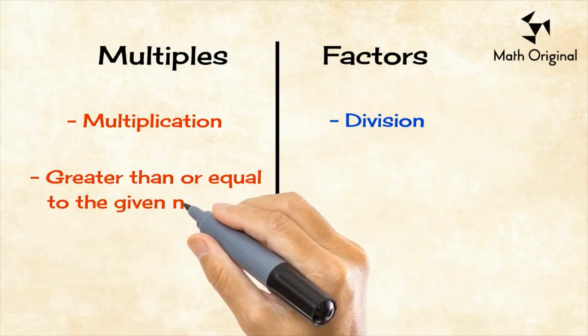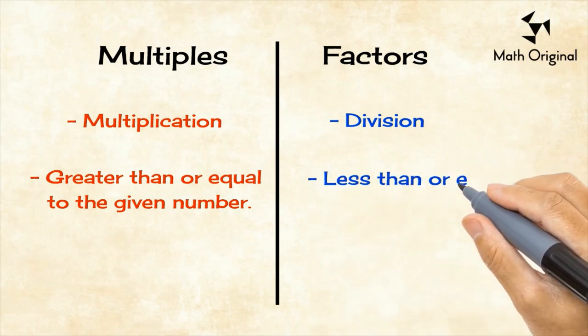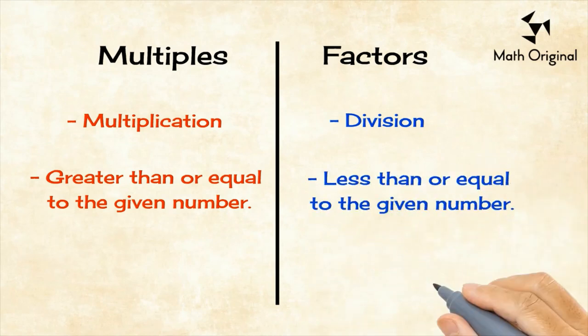The multiples are greater than or equal to the given number. On the other side, the factors are less than or equal to the given number.